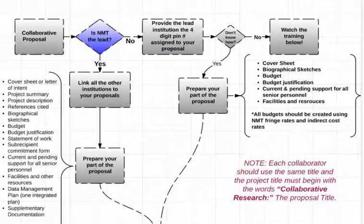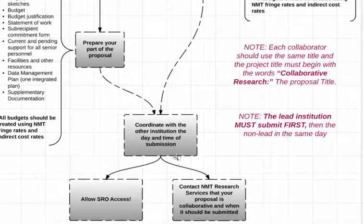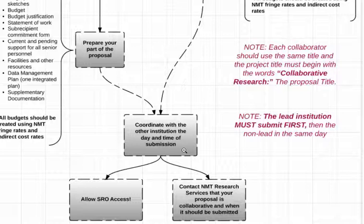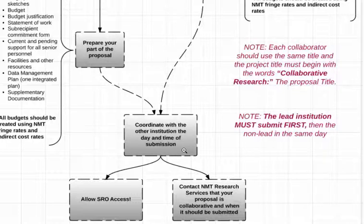The next step is to coordinate with the lead institution. Since we are not the lead, you need to coordinate with them regarding when they plan to submit. The way it works is they need to submit first, and then we submit. You need to be in contact either with the PI or with the Office of Research of the other institution, and once you know their timeline, let our office know when you want us to go ahead and submit.